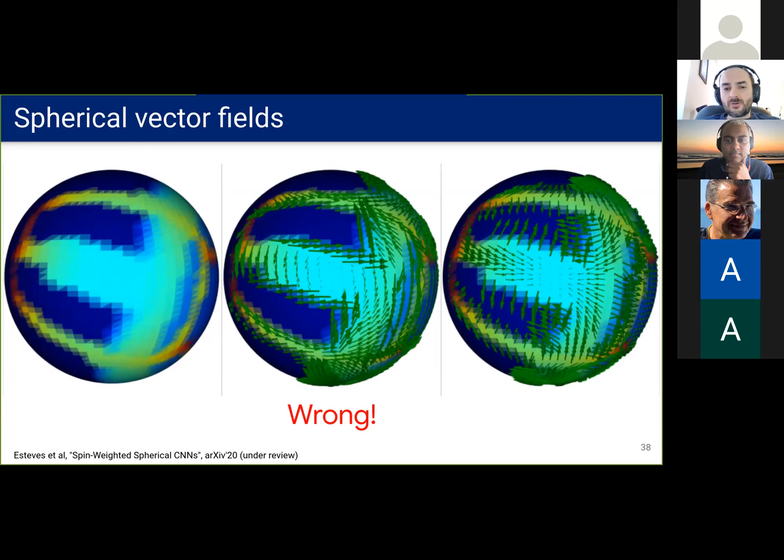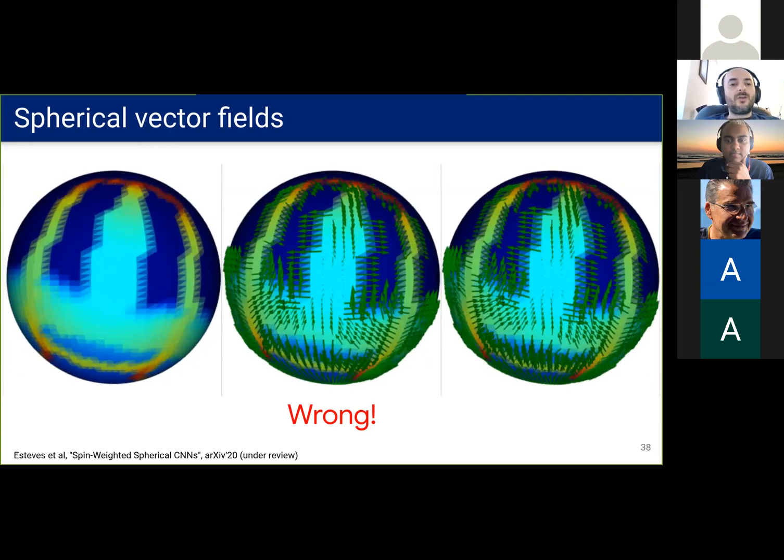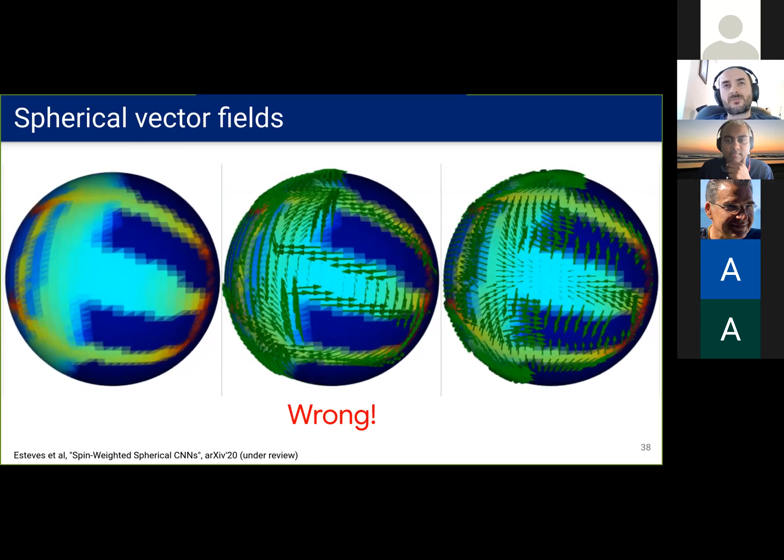Now the proper rotation of a spherical vector field involves moving the vectors, then rotating them. With this, we can have our more expressive features and also represent vector quantities.